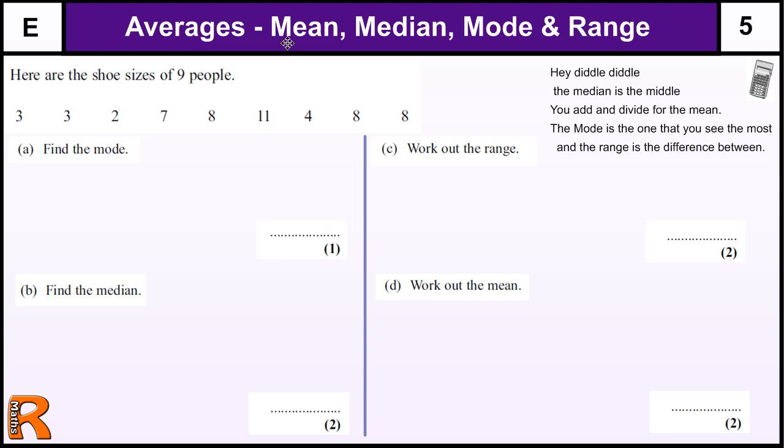The hey, diddle, diddle. The median is the middle. You add and divide for the mean. The mode is the one that you see the most, and the range is the difference between.